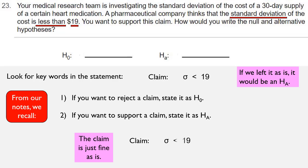So the claim here would be that sigma is less than $19, which is our HA. And the other hypothesis would be sigma greater than or equal to $19, which would be the H0.